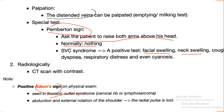CT scan with contrast can also assess for superior vena cava syndrome — dye is injected IV and under CT scan you can see that the dye does not flow directly from the superior vena cava to the right atrium, confirming decreased flow brought about by lung tumor.